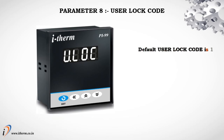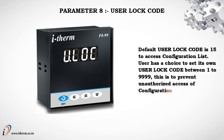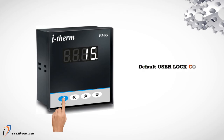Parameter 8: User Lock Code. The default User Lock Code is 15 to access the configuration list. The user has the option to set their own lock code between 1 and 9,999. This is to prevent unauthorized access to the configuration list. The default User Lock Code Value is 15.